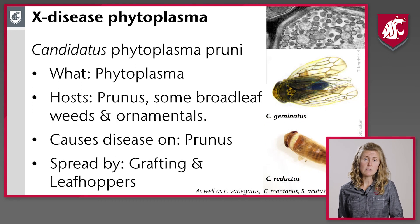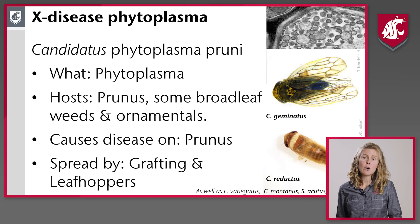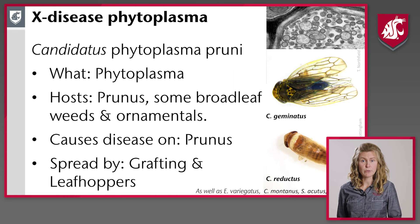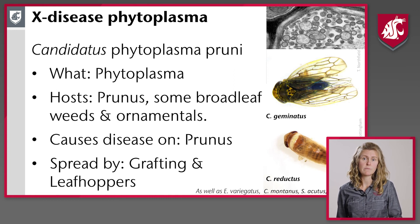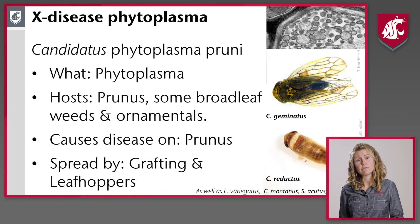X disease is caused by X disease phytoplasma. Phytoplasma are like a bacteria, but without a rigid cell wall. It's hosted not only by prunus, but also by some broadleaf weeds and ornamentals. It causes disease on all types of prunus — not only cherries, but peaches, plums, and nectarines. It's moved by not only grafting, but by insect vectors — in this case, the vector is certain types of leafhoppers.